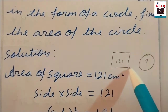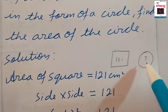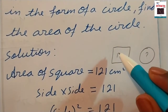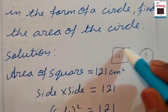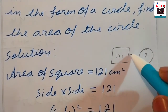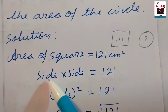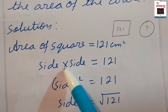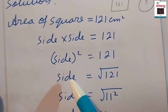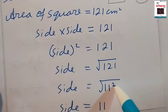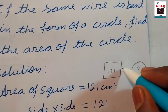We draw a diagram — the square has area 121 cm². The area of a square equals side into side. So side squared equals 121. Taking the square root, 11 squared equals 121, so the square root cancels and we get side equals 11 cm.